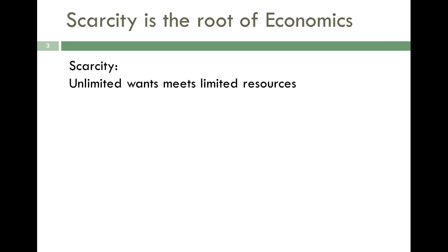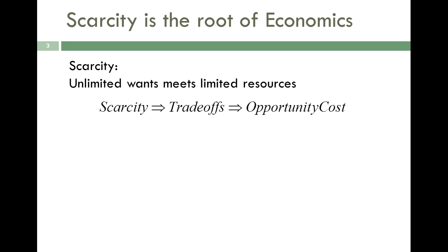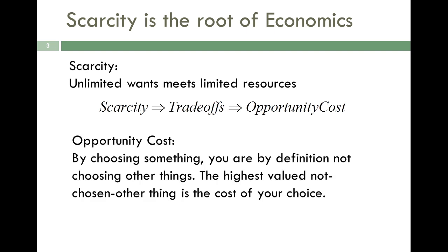We are all dealing with unlimited wants meeting limited resources. Even if you're the richest person in the world, you still have scarcity — because it's not just about money. It's about all resources, which would include time. When you've chosen to do an activity like come to this class and spend an hour on it, you are giving up anything else you could have done at that time. Because scarcity is an always-existing, ever-present condition, when you make decisions to use your time or money a certain way, you are by definition facing a trade-off. The technical term for valuing what you gave up is what we call opportunity cost.